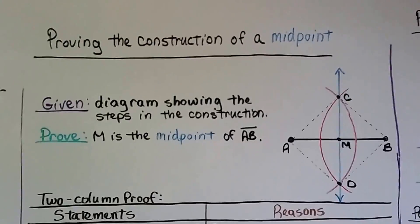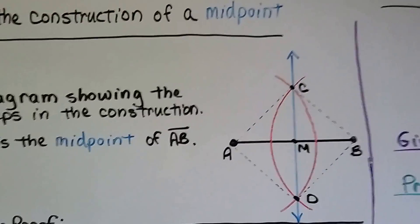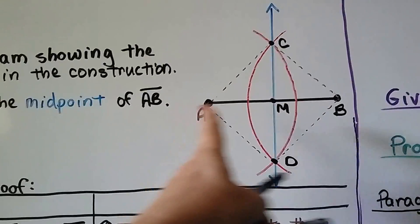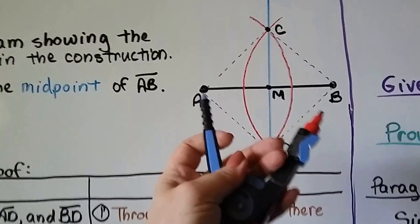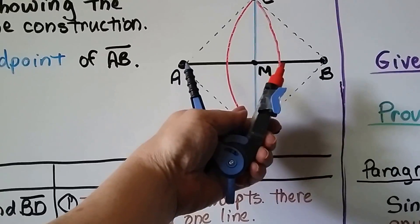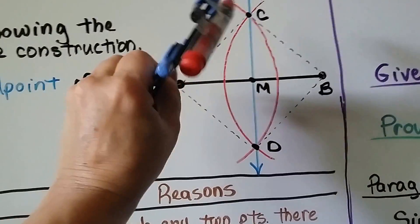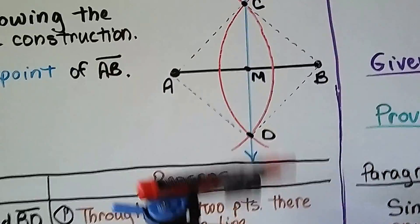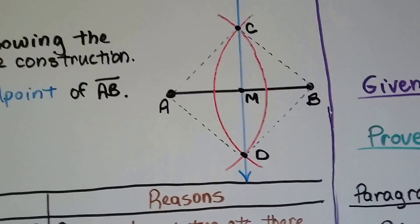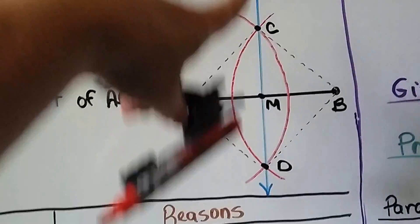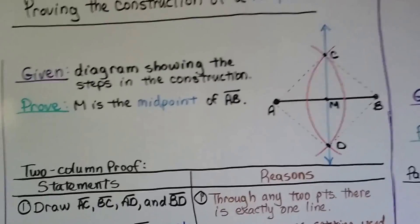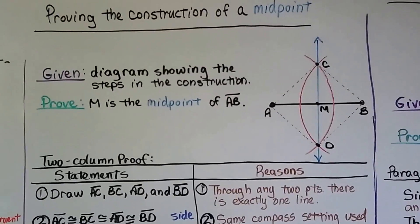Here's proving the construction of a midpoint. We have midpoint M and segment AB. We opened the compass more than halfway the length of AB and made an arc from point A, then from point B, marking the intersections C and D. Then we drew a line through C and D with a straight edge, and where it intersected AB is our midpoint M. The given is the diagram showing these construction steps, and we need to prove M is the midpoint of segment AB.